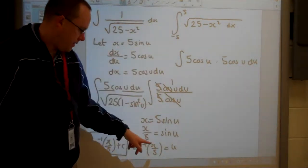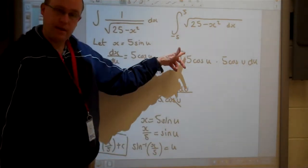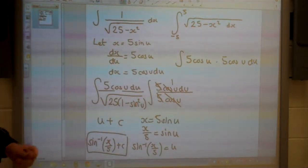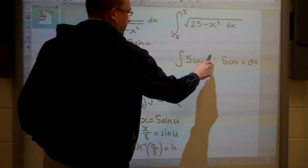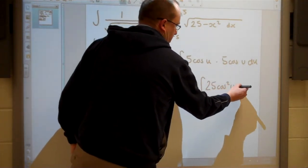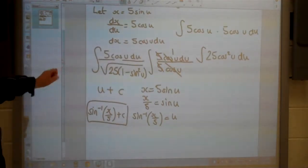So if I was to plug in 5 down here, 5 over 5 is 1, inverse sine of 1 and I could get a u limit. I'm going to leave it until the end of the question. Once it's back in terms of x then I'll substitute in my x limits. So simplified here, we've got the square root of 25 cosine squared u du. And we need to be very careful at this point.